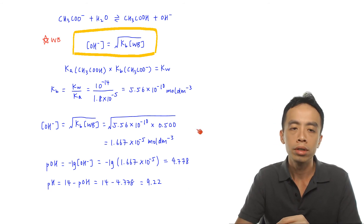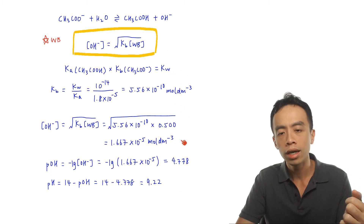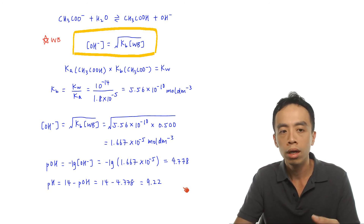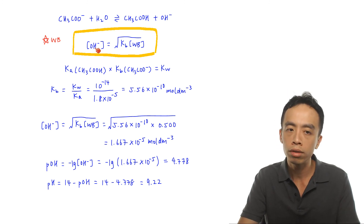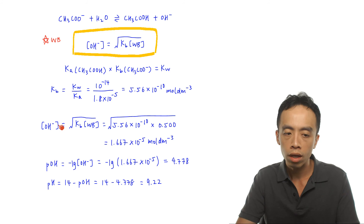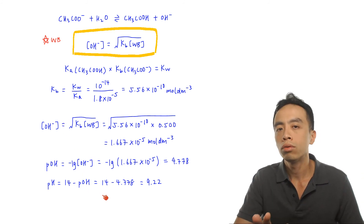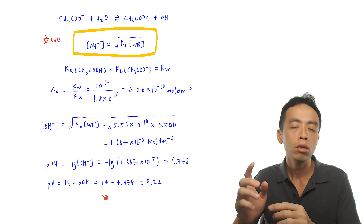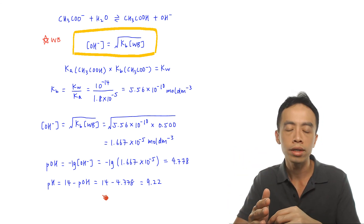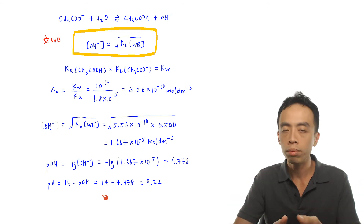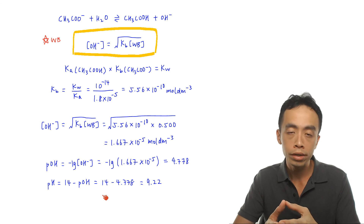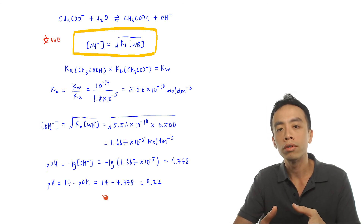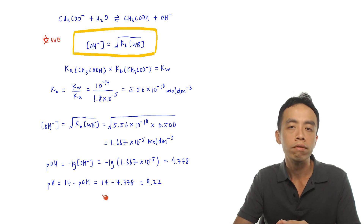Notice that these calculation steps are exactly the same as finding the pH of any weak base — find [OH⁻] using the formula, then find pOH, then find pH. To reiterate: the pH of a salt solution is determined by linking the salt to its conjugate base, recognizing the conjugate base as a weak base, and applying the weak base pH method.